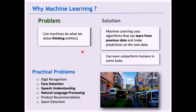Machine learning can even outperform humans on some tests. Practical problems solved by machine learning include digit recognition, face detection on mobile phones, speech understanding via natural language processing like Google Assistant and Amazon Alexa, and product recommendations on platforms like Google and Amazon.